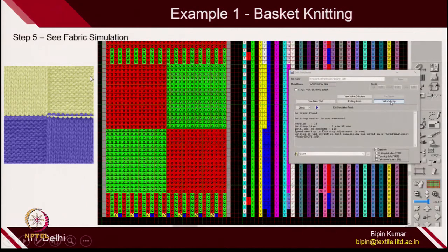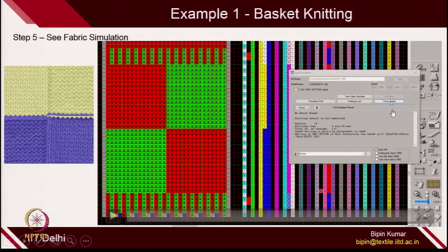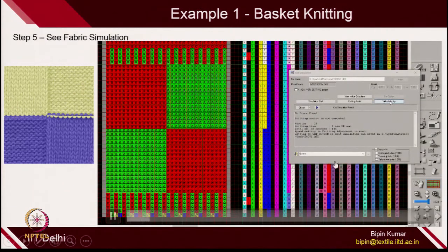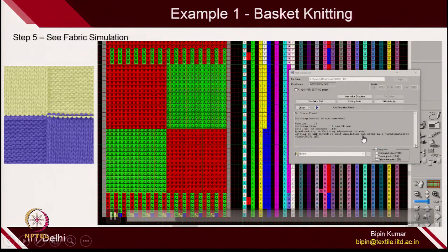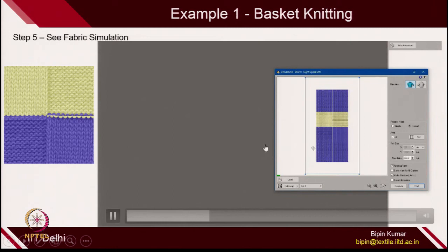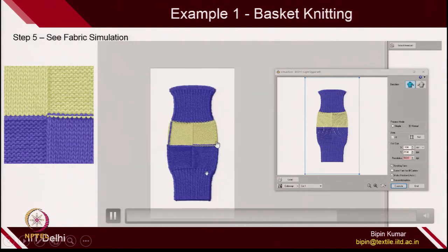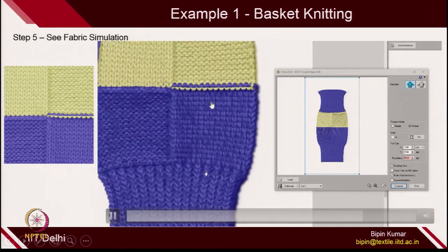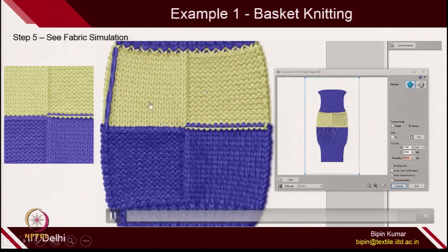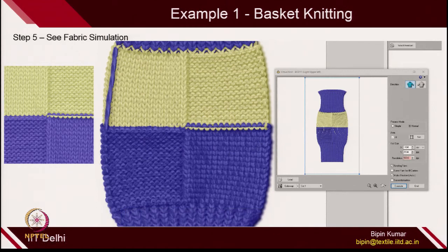The other thing is you can also see the fabric — how it will look — so that option is also there. Virtual display: the software will make the fabric and you can see how the fabric looks before even making the fabric on the machine. This is the virtual simulation of the fabric. You can zoom it out, set any DPI, check the colors, and this is how the fabric will actually look once formed. You can extend it, carefully see, enlarge any loops, any portion — this is how the fabric will look when you use 2 different colors and give that command on the machine. This is the power of design software.